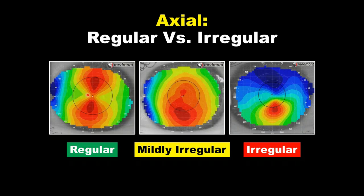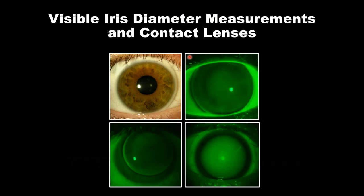Topographies are incredibly valuable in understanding vision potential. A high corneal astigmat with regular astigmatism should do very well — we can correct that patient with glasses, soft lenses, or rigid lenses. A patient showing irregularity in the inferior hemisphere may not achieve perfect quality of vision. A severely irregular patient will have very low best-corrected visual acuity. To understand vision potential, you want to use the axial map — axial for vision. But what else can we do with corneal topography to help with contact lenses?